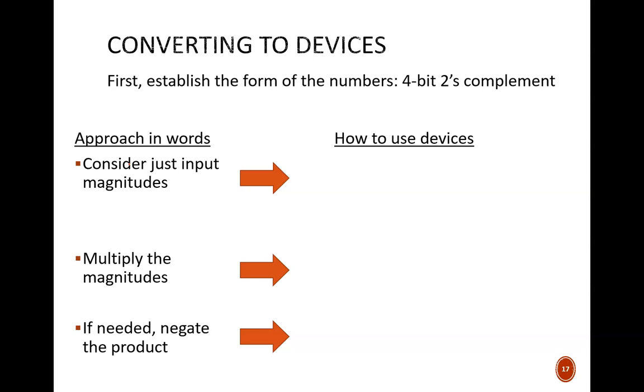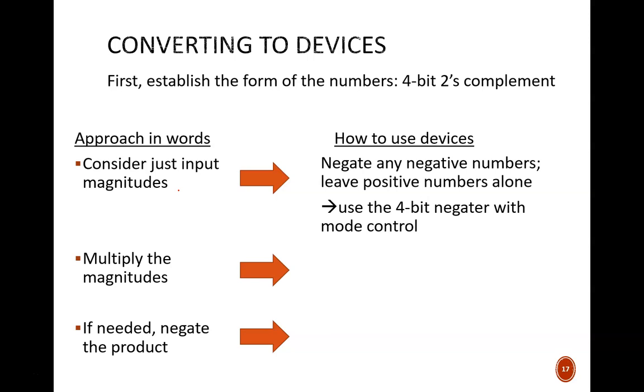Next, on the left side, I've written out the three steps of our procedure. Let's consider each one and how we might apply logic circuits we've already explored in past lessons. Think of these devices as tools in our tool belt. Consider just the magnitude of an input number means that we must negate any negative numbers and thus make them positive. Also, we must leave positive numbers as is. We have a device that can do this, the 4-bit negator with mode control.